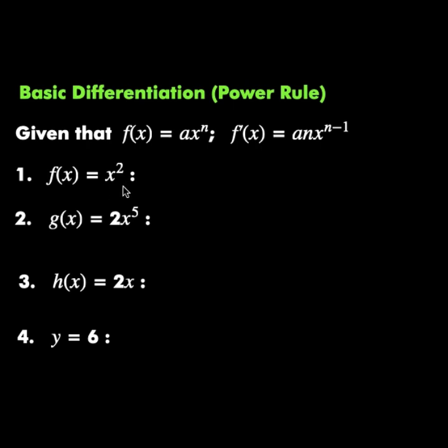Function f is equal to x squared. Therefore the derivative of f is equal to 2 times x raised to power 2 minus 1. 2 minus 1 is 1.